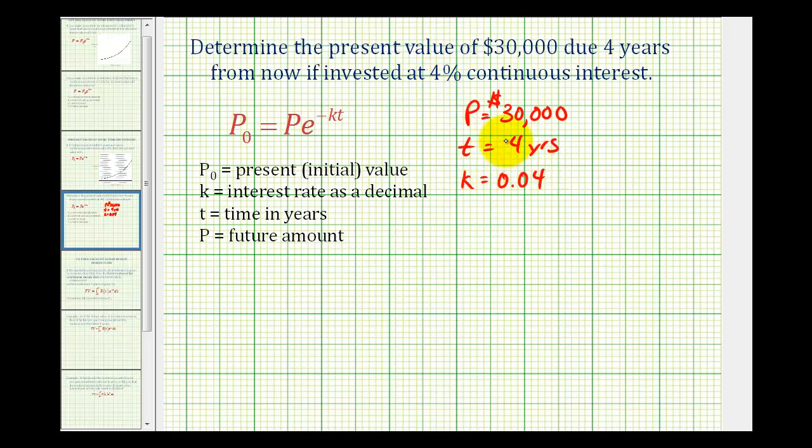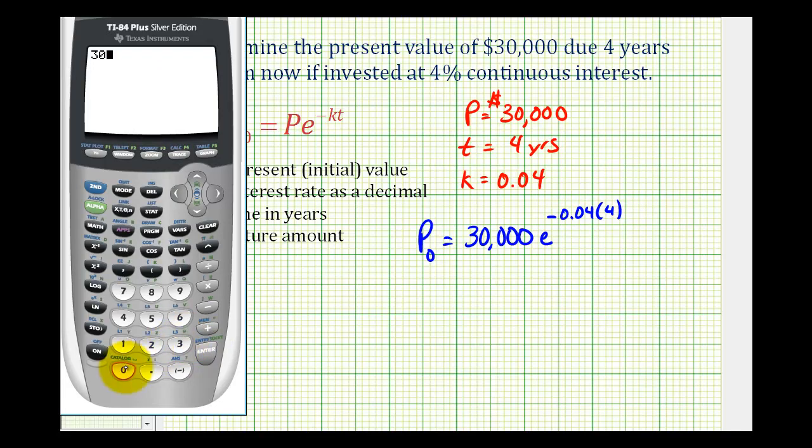And now we'll just substitute these values into our equation for present value. We'll have the present value is equal to thirty thousand dollars times e to the negative zero point zero four times four. So we'll have thirty thousand, second natural log brings up e raised to the power, and we have negative zero point zero four times four.